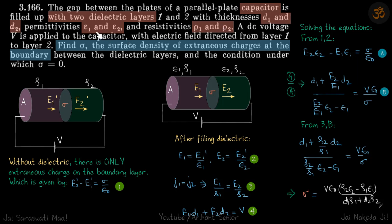The permittivities are epsilon 1 and epsilon 2 and resistivities are rho 1 and rho 2. Basically, except the surface area, everything is different between the two materials.